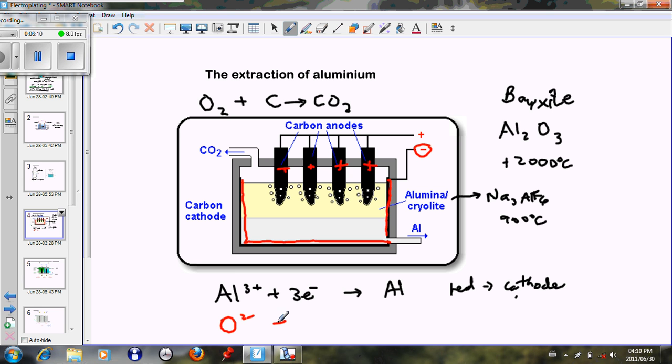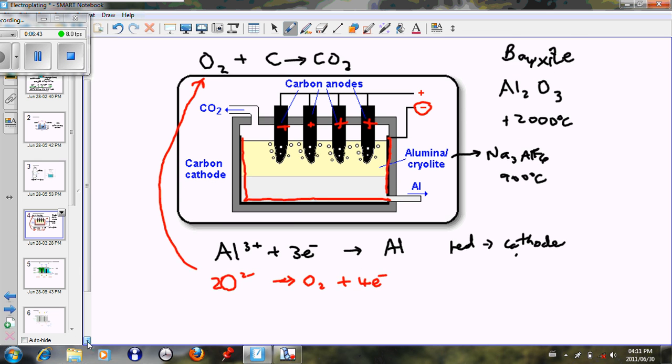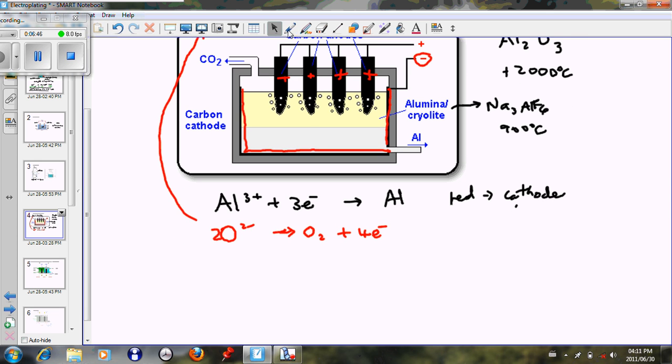By giving off electrons—not two electrons, if you have to balance it, it becomes four electrons—just to balance it out. This is what happens at the anode. Then, as we have mentioned, the oxygen reacts with the carbon of the electrodes and it forms carbon dioxide that is given out there.